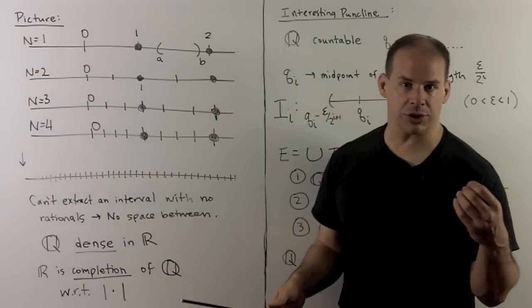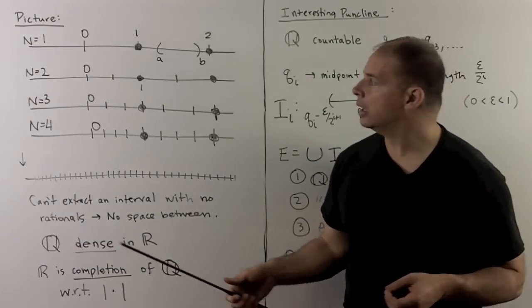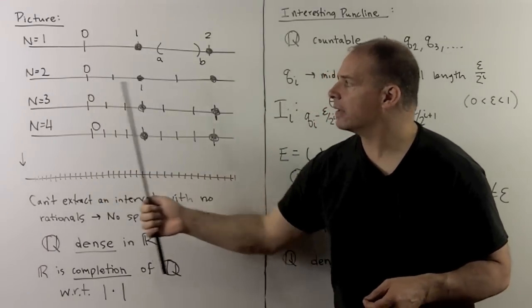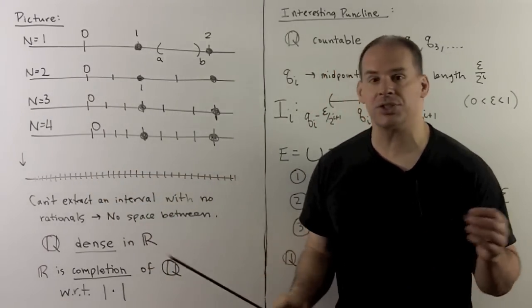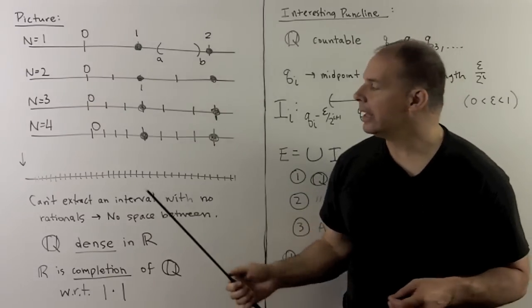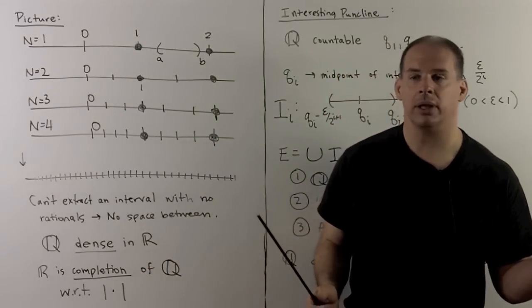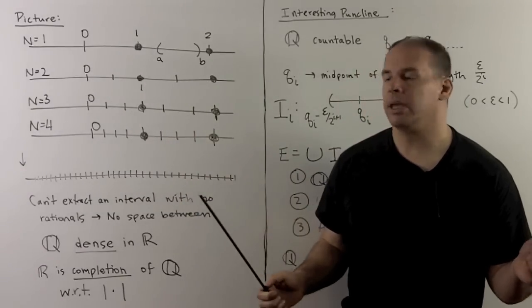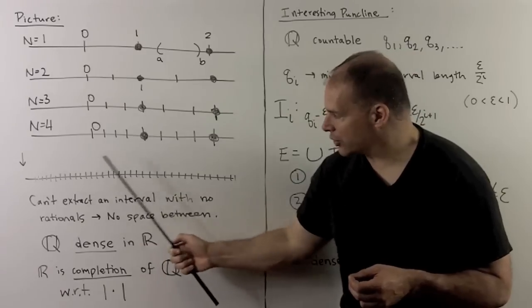Let's recall our familiar picture of the rationals sitting inside the reals. We start with the integers, then we'll add in the integer multiples of a half, of a third, of a fourth, and so on. At any stage, there are going to be gaps between the rationals, but if we take all of these at once, the gaps are going to disappear, and we'll just have holes at the irrational points.